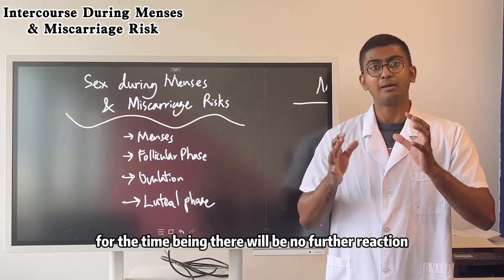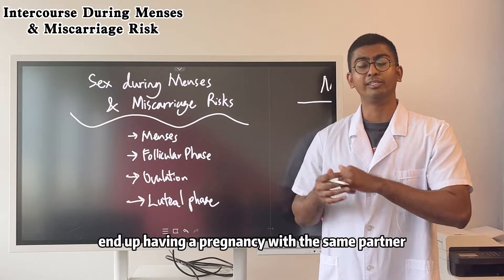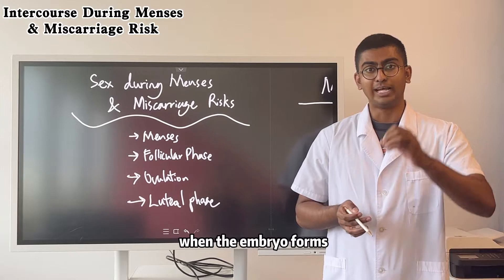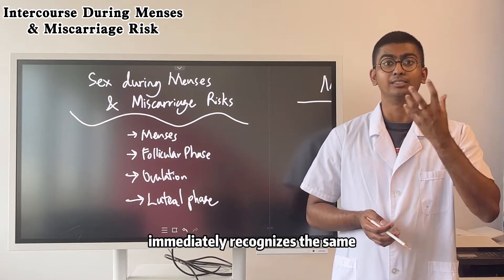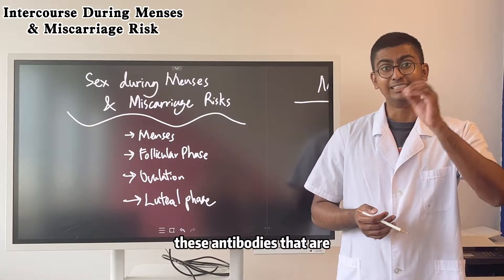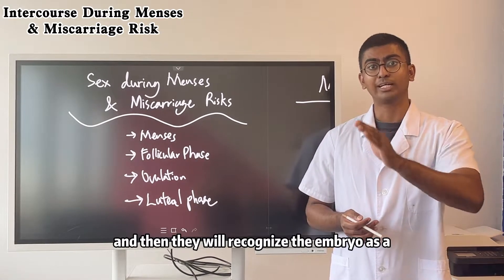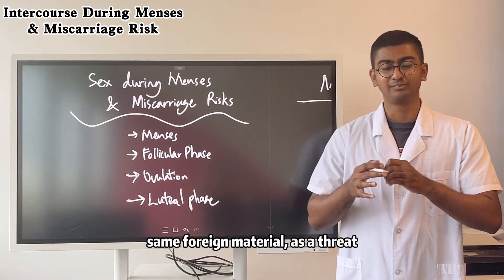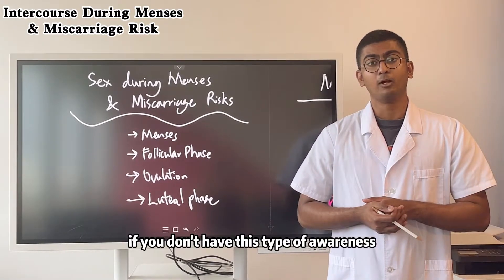For the time being, there will be no further reaction. However, if you do end up having a pregnancy with the same partner, with the same paternal genes, when the embryo forms, the mother's immune system immediately recognises the same paternal genes within the embryo. These antibodies that are already in your system get activated, and then they will recognise the embryo as the same foreign material — a threat — which is what leads to a very early pregnancy loss if you don't have this kind of awareness.